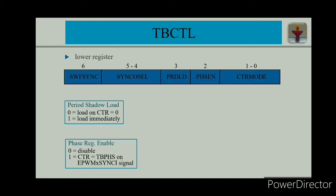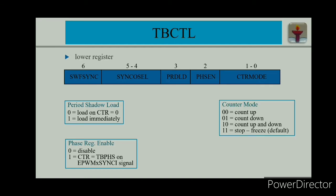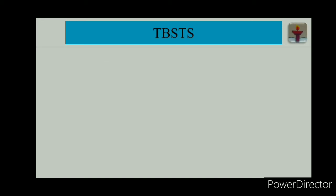Phase enable: setting enable equals 1 preloads the register TBCTR from TBPHS by a synchronization input trigger. If you don't want to use it, disable it; otherwise set it to 1. Counter mode provides different operating modes: count-up mode, count-down mode (01), count up-and-down mode (10). By default it will be stopped — the counter is frozen and will neither count up nor count down.